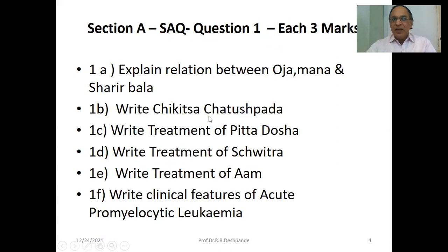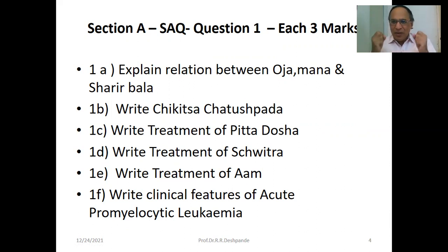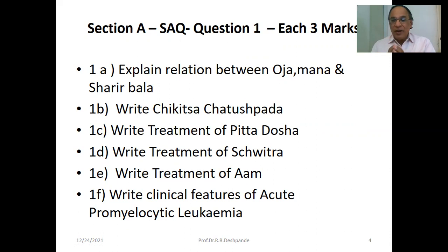Kaya Chikitsa Paper 1. SAQ — short answer question, 3 to 5 lines. Explain the relation between Oja, Mana, and Sharirabal. As you know very well, Pravara, Madhyama, and Avara Sattva — mind is of three qualities: best quality of mind, moderate, and lower. Our immunity, our Oja, is dependent on the quality of mind as well as the strength of the body. When your body strength is good, your immunity will be good.